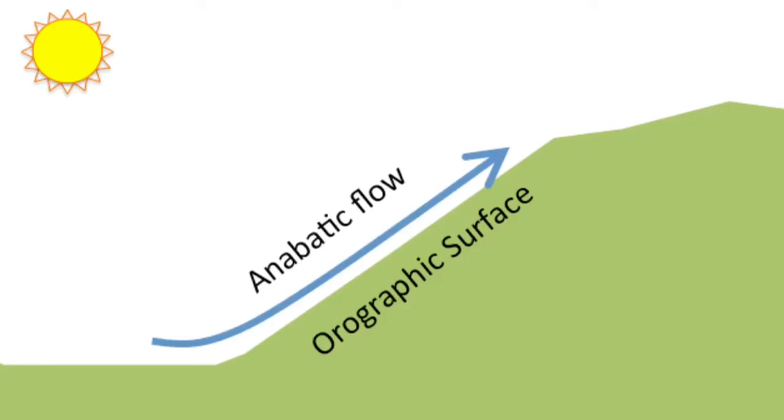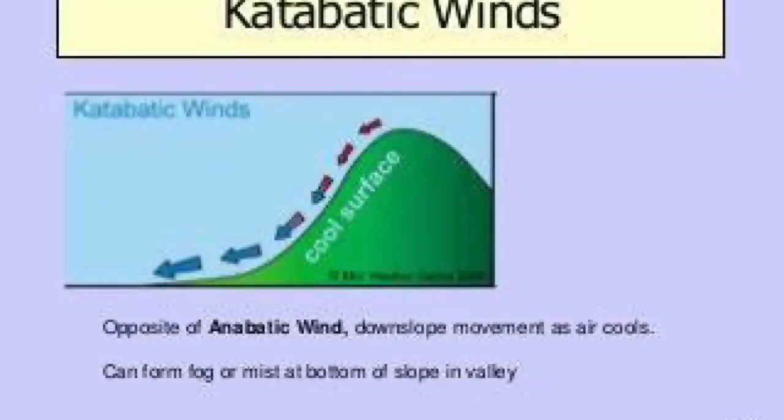Local surface winds are sometimes more a function of temperature differences between mountain tops and lower elevation than overriding synoptic winds. These winds are called mountain winds as they occur most frequently in mountain areas. Meteorologists call them katabatic or anabatic winds.